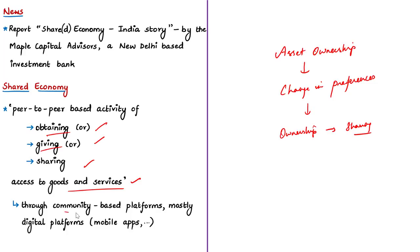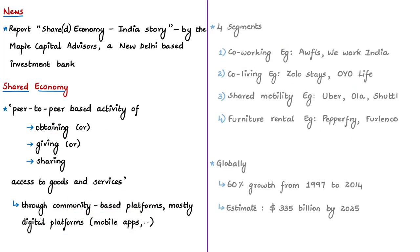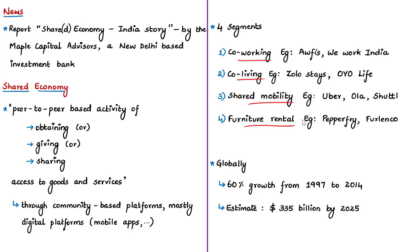This report has categorized the shared economy into four major segments: co-working, co-living, shared mobility, and furniture rental. For example, if you are an IT employee who daily takes an Uber or Ola cab to your office located inside an IT park, from a furnished apartment where you live, you are already a part of the shared economy — with or without knowing it. Let us see some examples to get a better understanding of the shared economy.